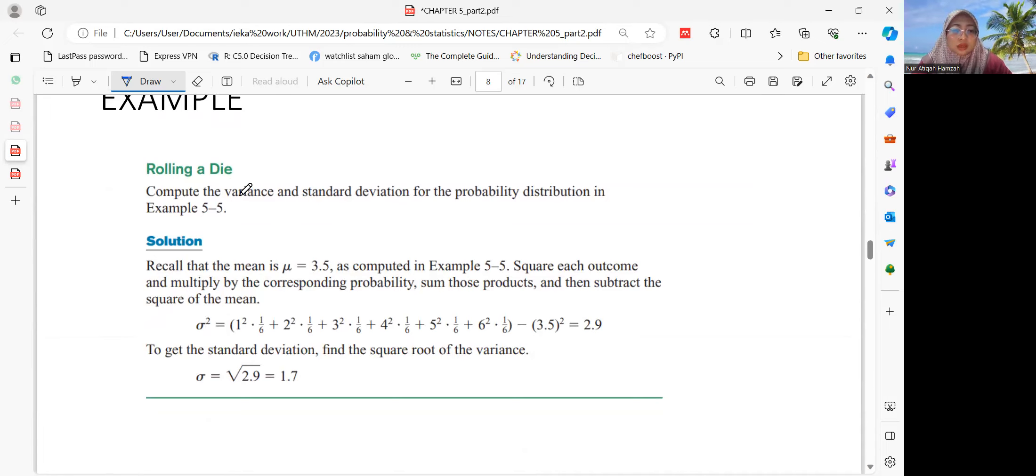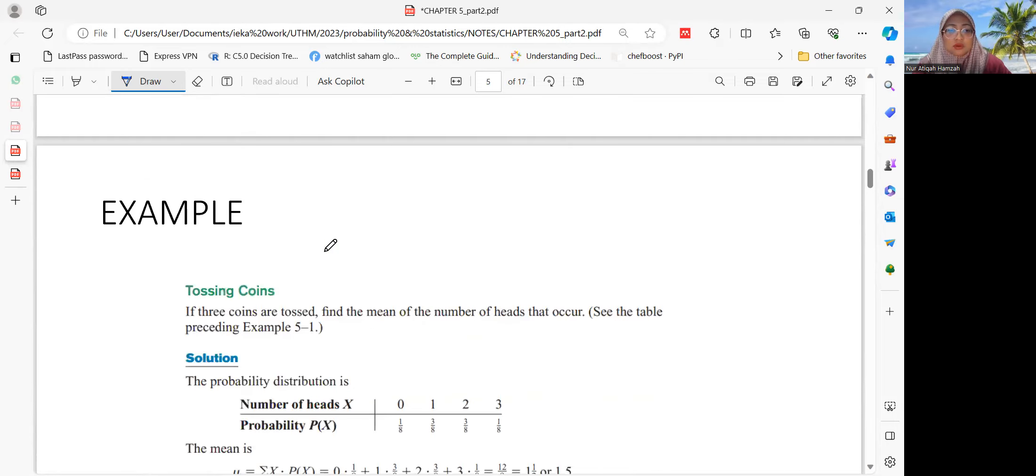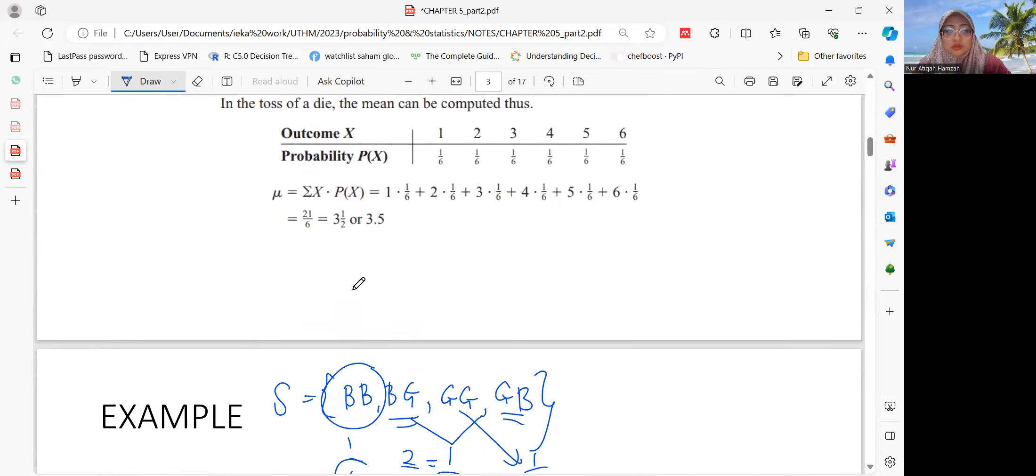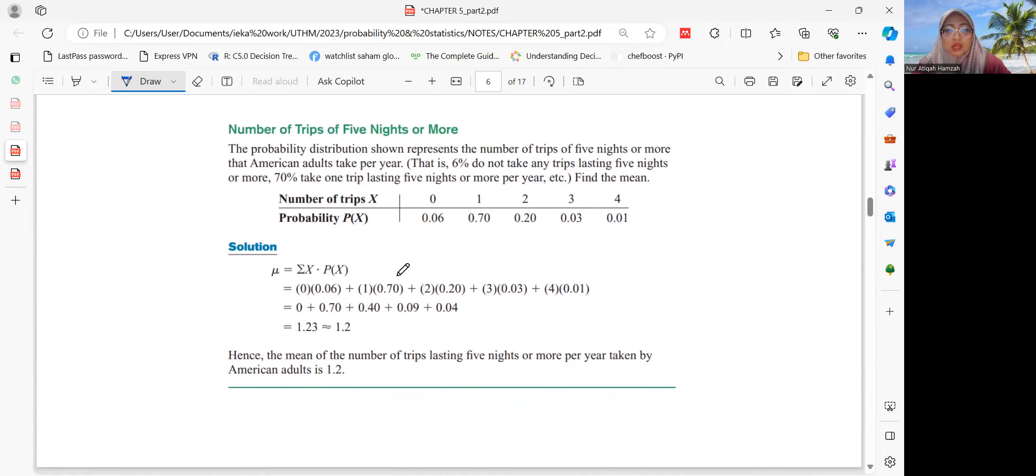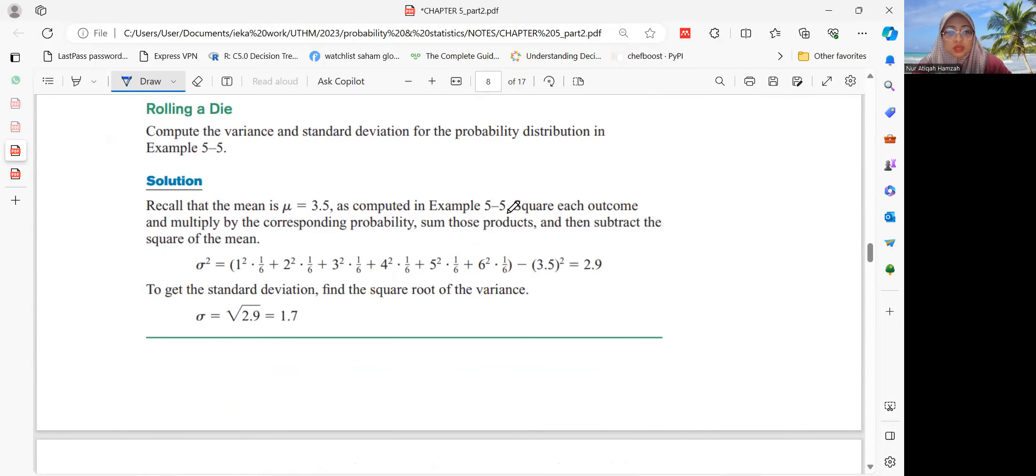Let's use the same example, rolling a die. You know that the mean is 3.5 for the example above that we looked at. Find the variance. Square each outcome and multiply by the corresponding probability, sum those products, and then subtract the square of the mean. So you need to understand how to insert values into the formula. If earlier mu was only x times P(x), to get variance you need to square your x first.